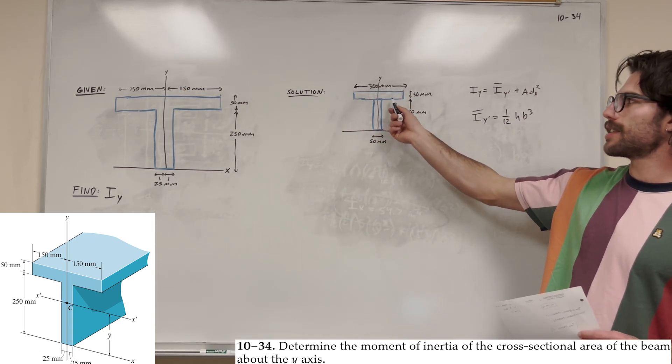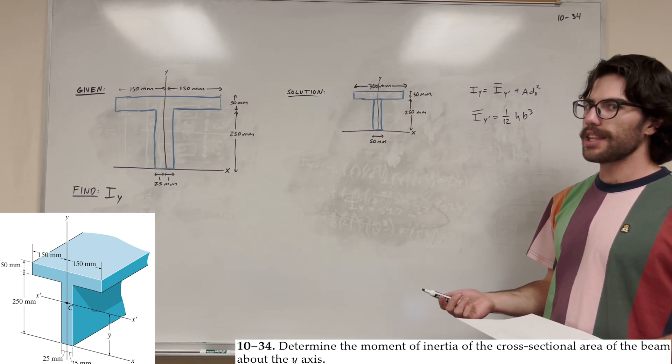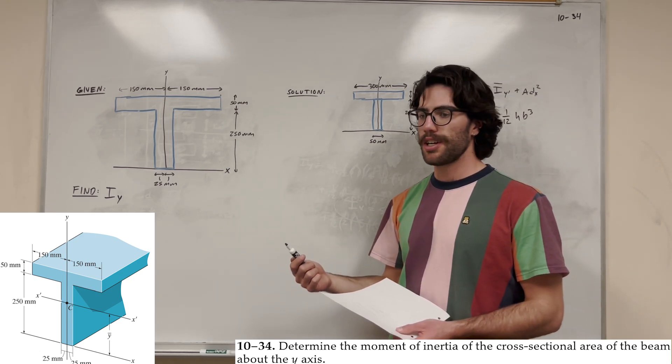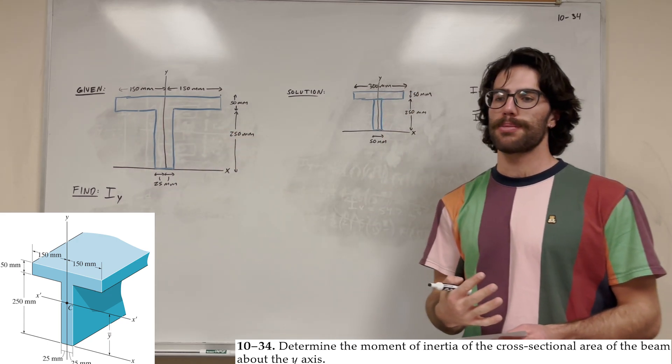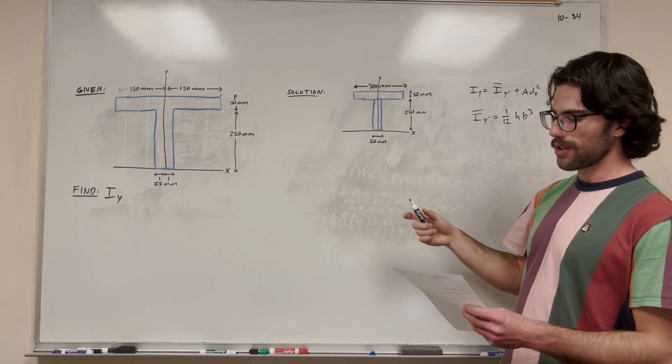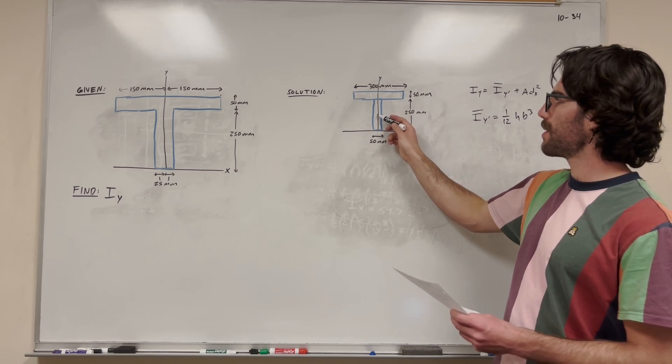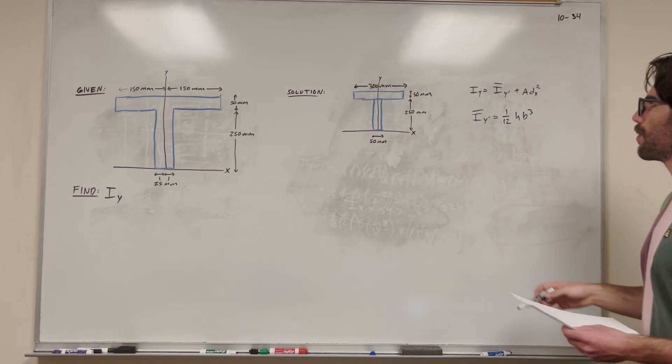I went ahead and simplified this into two shapes. The reason I did that is because when you're finding moment of inertia, you want to break down this complicated shape into the most simple shapes possible, which in this case is going to be two rectangles. Rectangle number one on the top and rectangle number two, the vertical one.